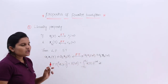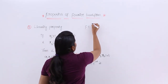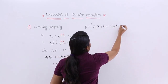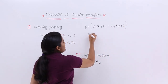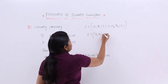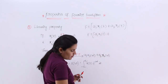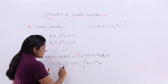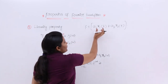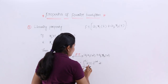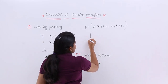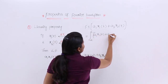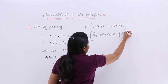Now if you are considering the Fourier transform of a1·x1(t) plus a2·x2(t), I want to treat this as x(t). If you want the Fourier transform of x(t), you need to substitute in place of x(t). So this is equal to the integral from minus infinity to infinity of [a1·x1(t) plus a2·x2(t)] times e^(−jωt) dt.